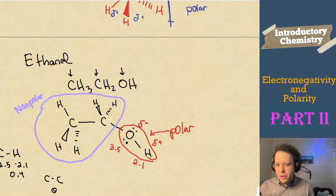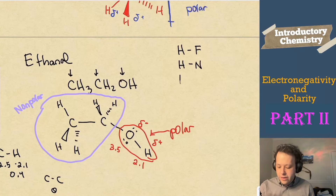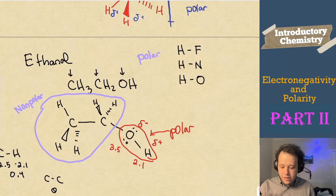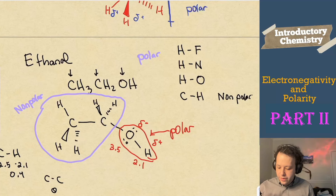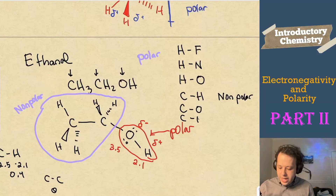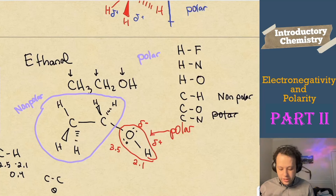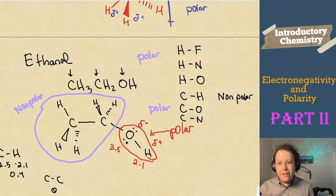There are specific bond types that can help you quickly decide polarity. H-F, H-N, and H-O bonds are always polar. C-H bonds are non-polar. C-O and C-N bonds are polar. This short list of trends will help you quickly identify polar and non-polar regions in larger molecules.